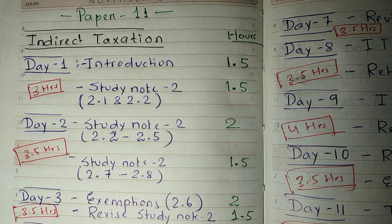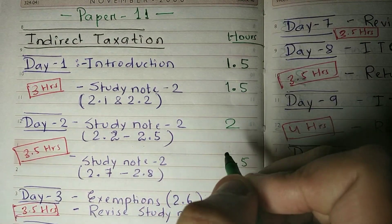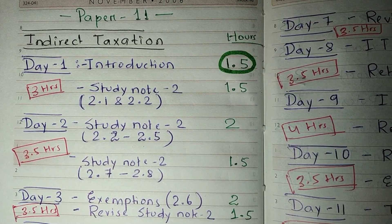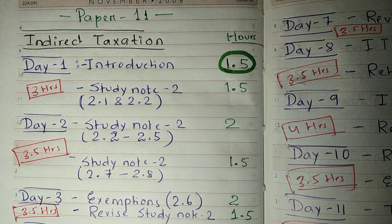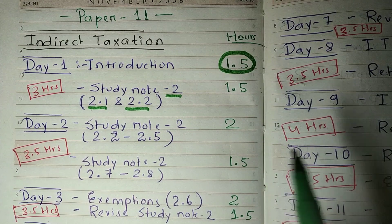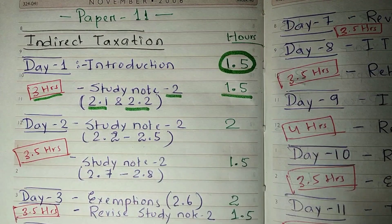On day one, we will start with the introduction chapter — around 12 or 13 pages — which will take about 1.5 hours. Then we will start the levy and collection of GST, which is study note number 2, and that will also take 1.5 hours. So day one requires a total of 3 hours.